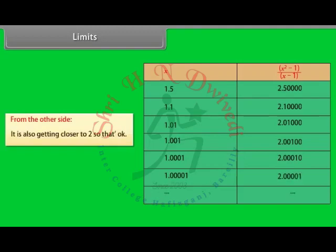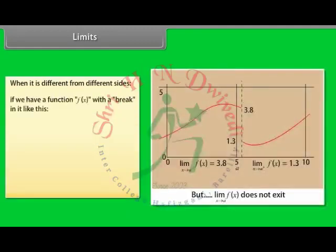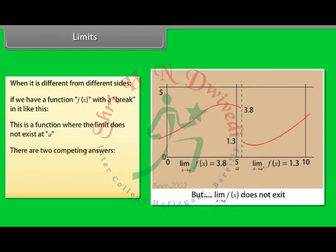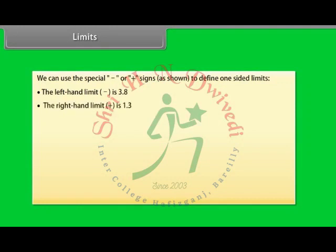So that's okay. But what if we have a function f(x) with a break in it? This is a function where the limit does not exist at A — you cannot say what it is because there are two competing answers: 3.8 from the left and 1.3 from the right. You can use the special minus or plus signs to define one-sided limits: the left-hand limit is 3.8, the right-hand limit is 1.3, and the ordinary limit does not exist.